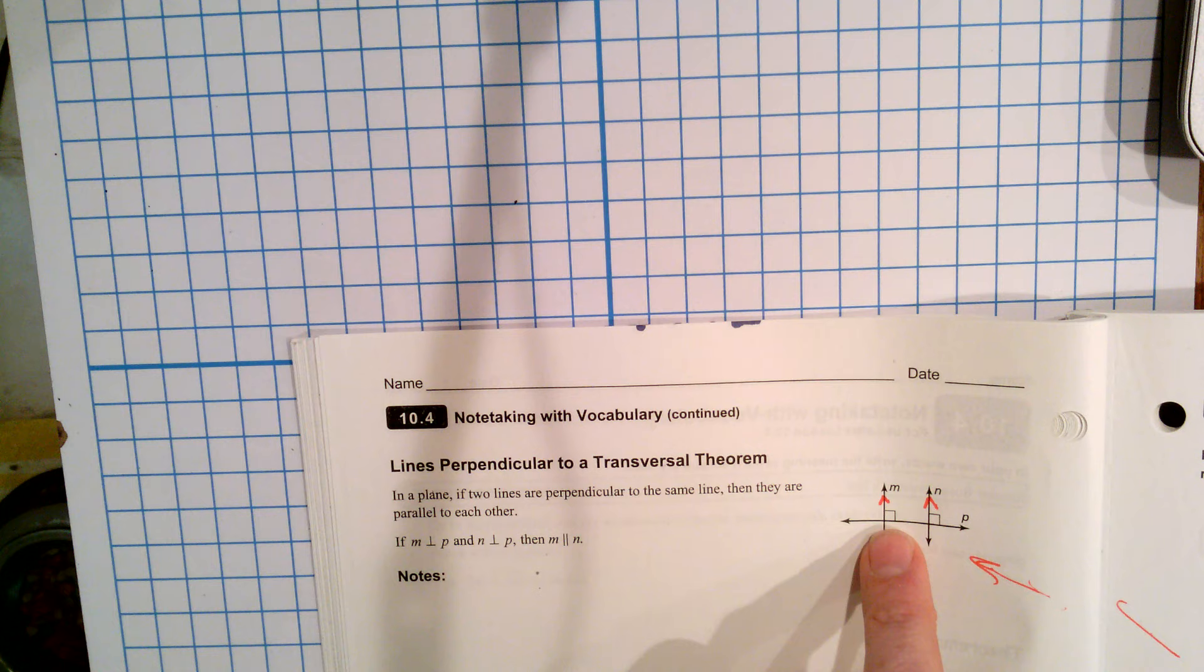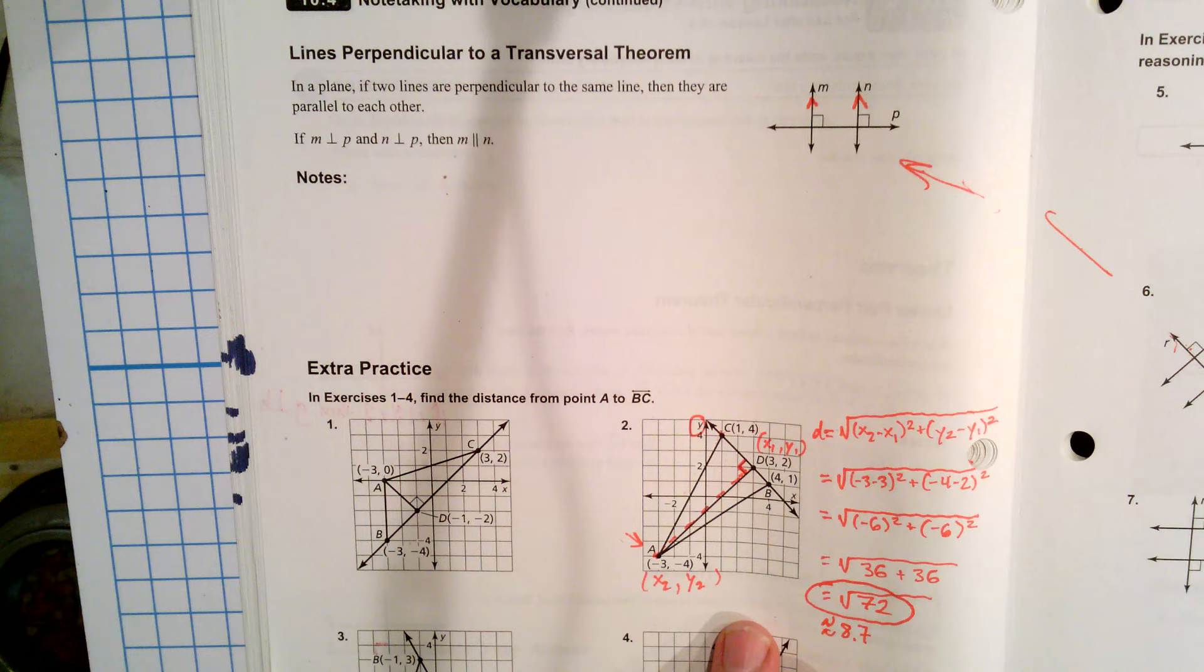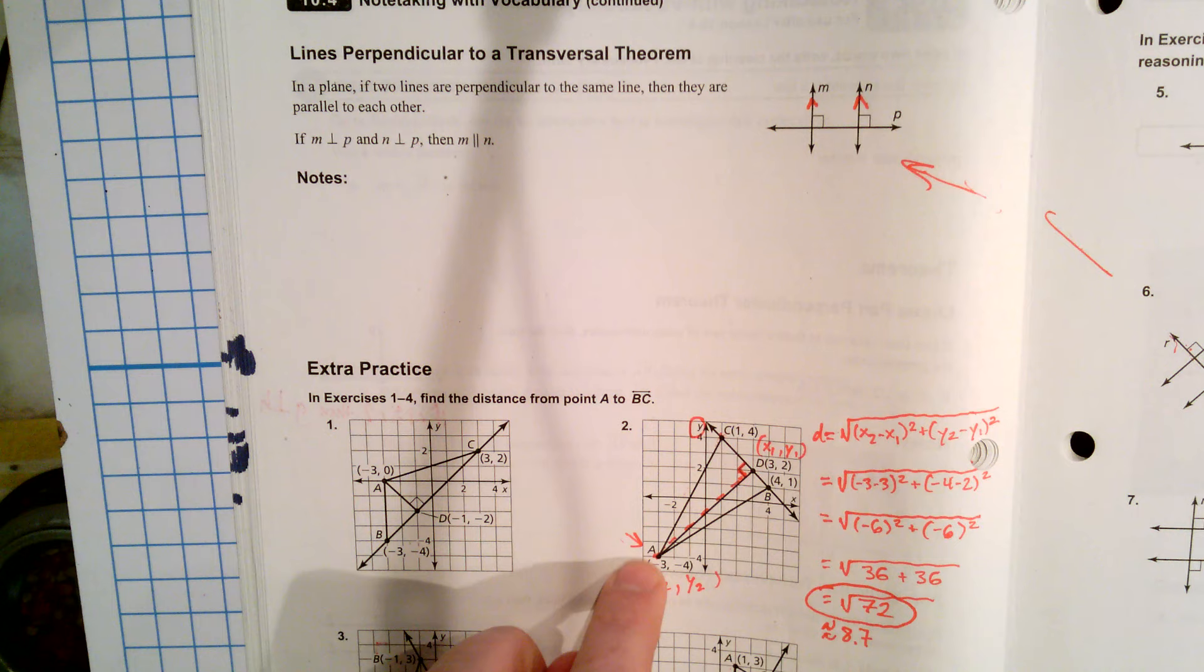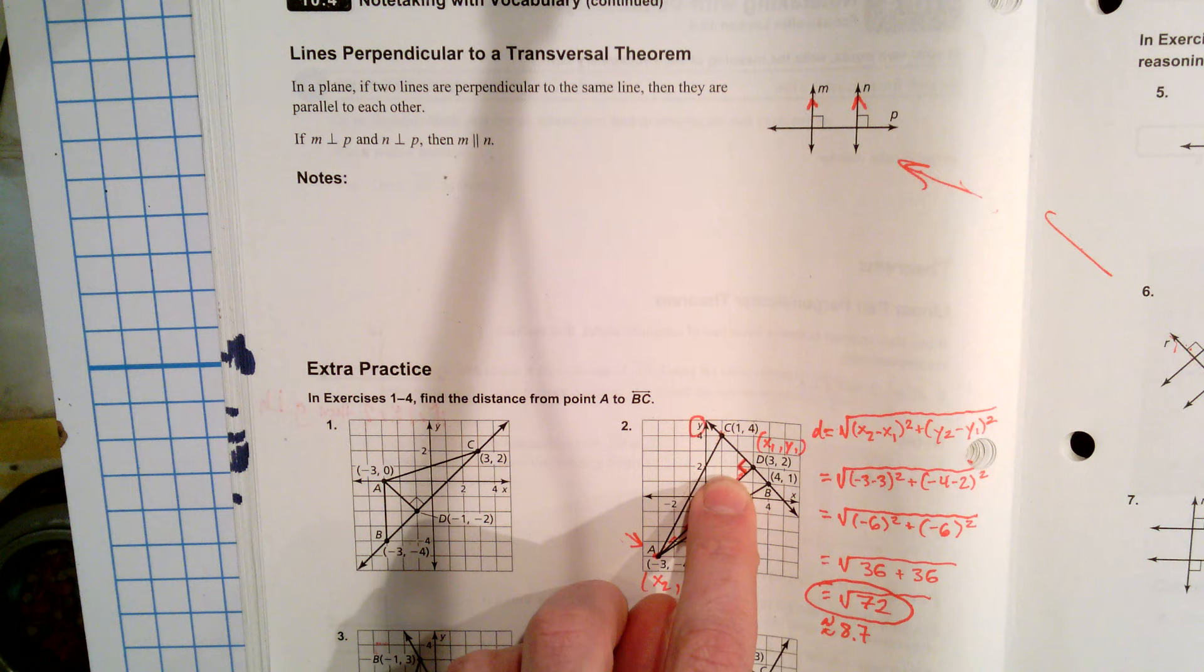Next, perpendicular transversal theorem. Here's what that means. That means if I have two lines intersecting a transversal. So this transversal is at 90 degrees to one of the lines, line H, and line H is parallel to line K, then I know J is also perpendicular to line K. Again, the shorthand of these really helps so you can read it like this. If H is parallel to line K and J is perpendicular to H, then J is perpendicular to K.